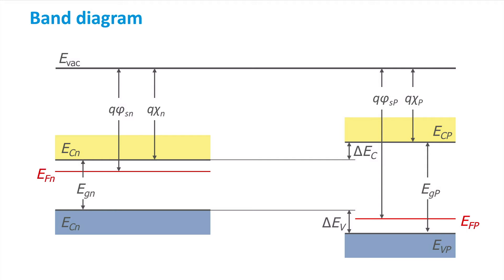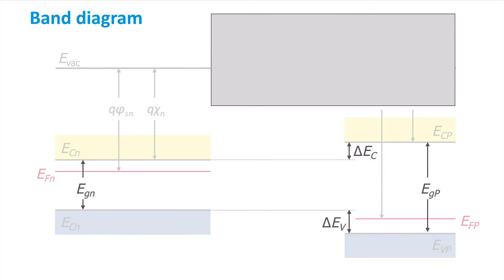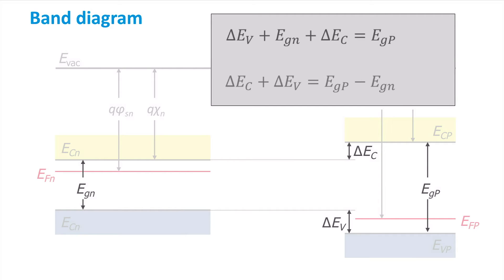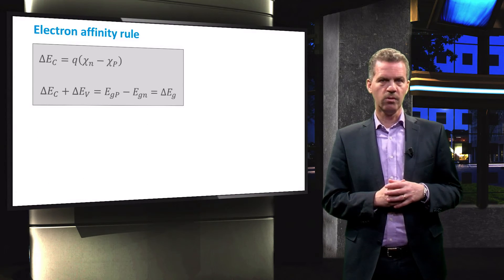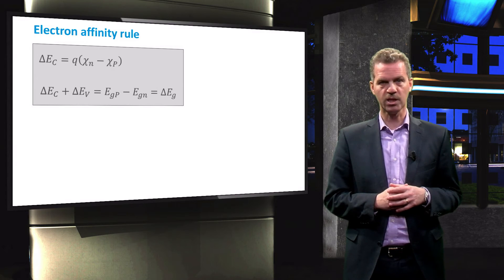The parameters shown in these figures are related to each other via two equations, which we will derive now. First, we can relate the electron affinities to each other with a simple equation. After rewriting, we obtain an equation showing that the difference between the conduction band edges is equal to the difference between the electron affinities of the two materials. Next, we can relate the band gaps of the two materials, and rearranging shows that the difference between the valence and conduction band edges is equal to the difference between the band gaps. This band gap difference is simply written as ΔEg. The two equations together form the so-called electron affinity rule, which states that all energy differences between the two materials can be expressed in terms of the electron affinities.